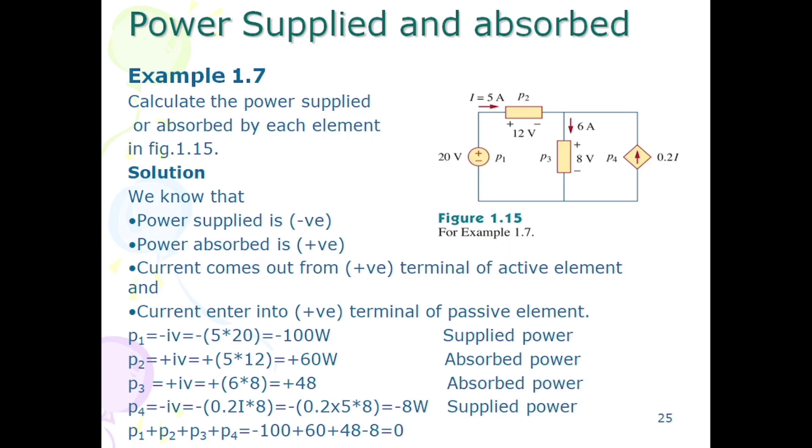Now we have to find out power supplied and absorbed in example 1.7 in a given circuit figure 1.15. We know that power supplied is negative and power absorbed is taken as positive. If we supply a power, it means that a source, let's suppose a current source or a voltage source.